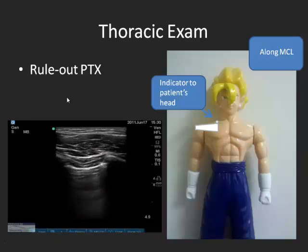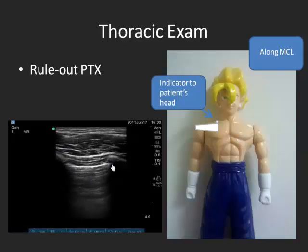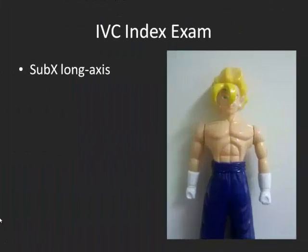When you have a patient breathing, you can see all these little elements moving and sliding — we call that the marching ants. The IVC index exam is actually a sub-xiphoid long axis view. You can take your probe, put it longitudinally, go sub-xiphoid, and then pan over to the right side of the patient until you see this big black blood vessel, which is your IVC.